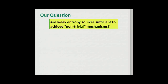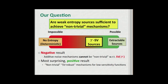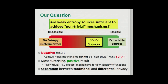So now our question becomes: are weak entropy sources sufficient to achieve non-trivial mechanisms? Let me show you our results. We only consider the case of Santha-Vazirani sources, and we show both negative and positive results. The negative result is that additive noise mechanisms cannot be non-trivial with respect to Santha-Vazirani. But most surprising is our positive result: we show a non-trivial SV-robust mechanism for low-sensitivity functions. This gives us a separation between traditional and differential privacy — while traditional privacy cannot be based on SV sources, here we show differential privacy can be achieved with SV sources.